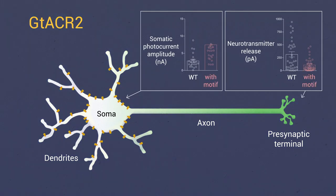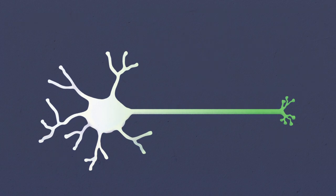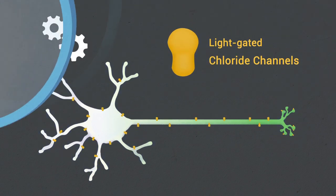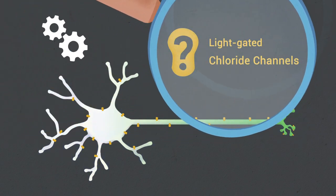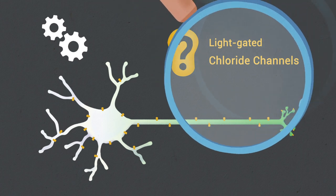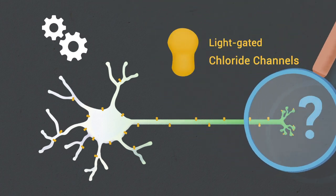Activation of somatodendritically targeted GT-ACR2 results in larger photocurrents at the soma and less neurotransmitter release. Taking together, our results highlight the necessity of precisely determining the effects of light-gated chloride channels under specific experimental conditions and provide a much improved light-gated chloride channel for optogenetic inhibition.